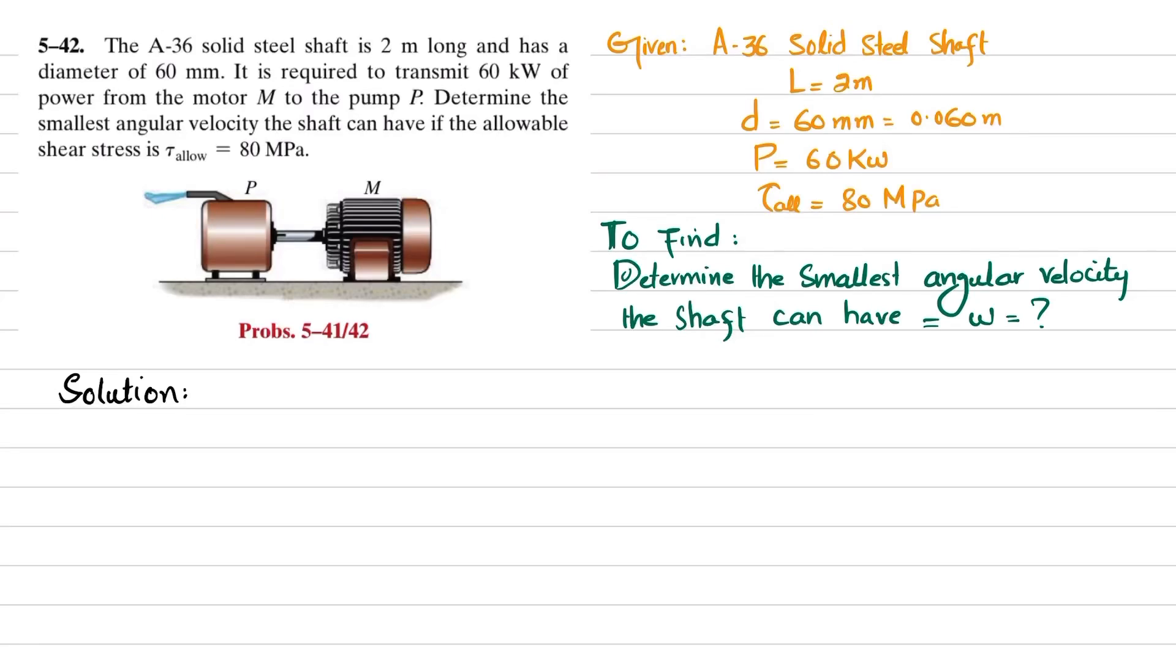Welcome back. Problem 5-42. The A-36 solid steel shaft is 2 meters long and has a diameter of 60 millimeters. It is required to transmit power of 60 kilowatts from the motor M to the pump P.